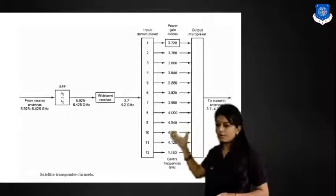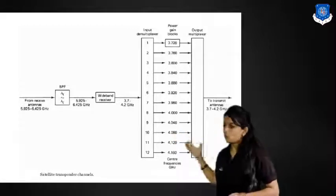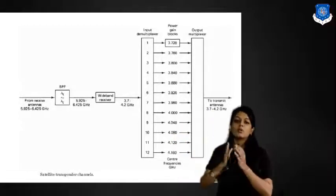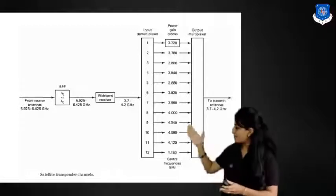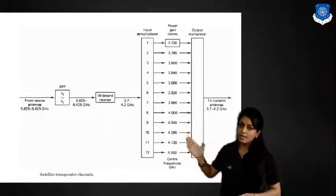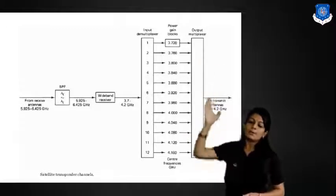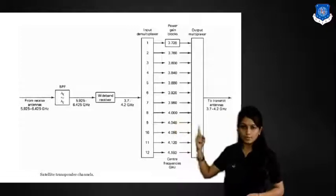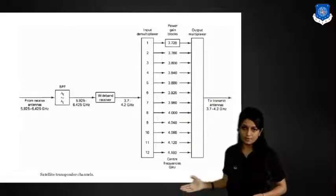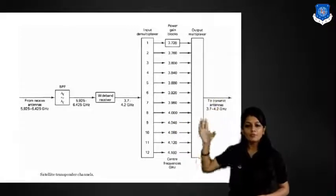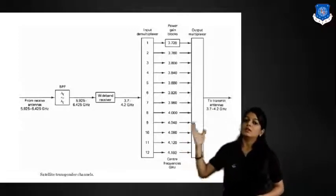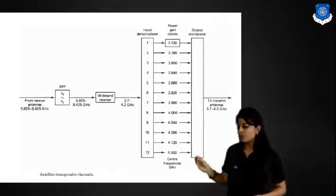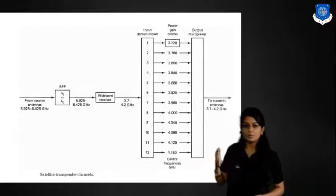The frequency is received around 5.9 to 6.4 GHz. It is applied to the bandpass filter for a specific band. The wideband receiver receives the signal and it is applied to the input multiplexer, which has one input and multiple outputs. With the help of power gain, the required amount of gain is provided and applied to the multiplexer.